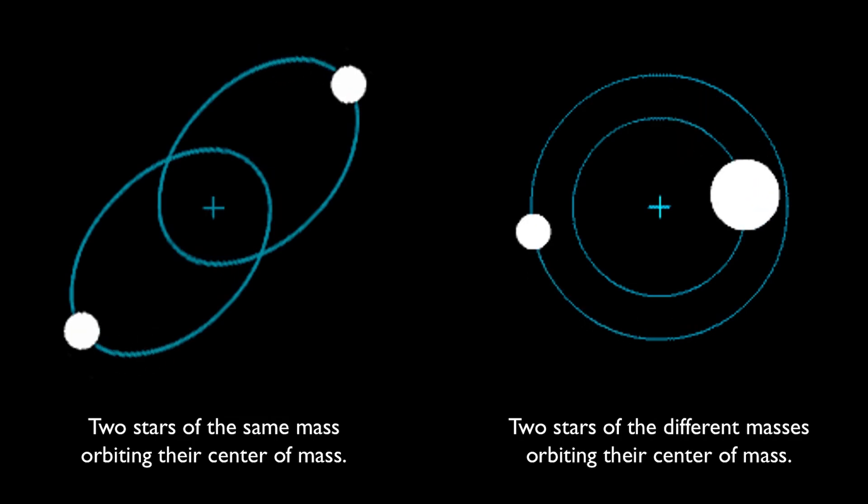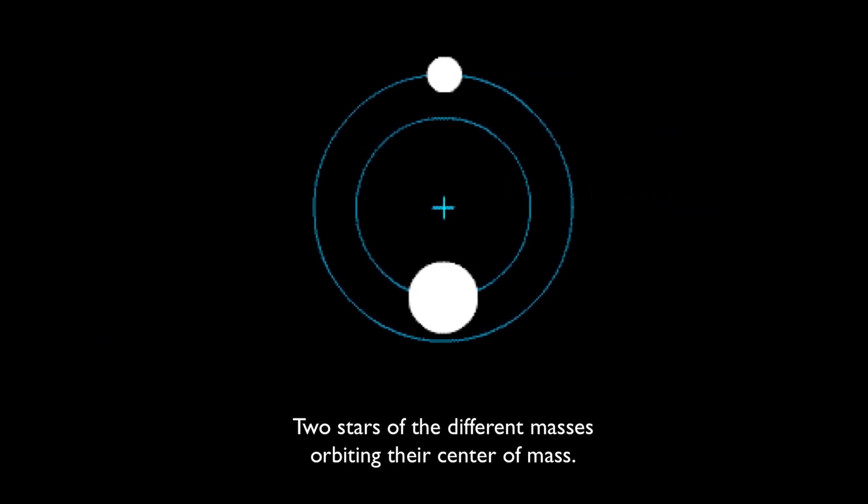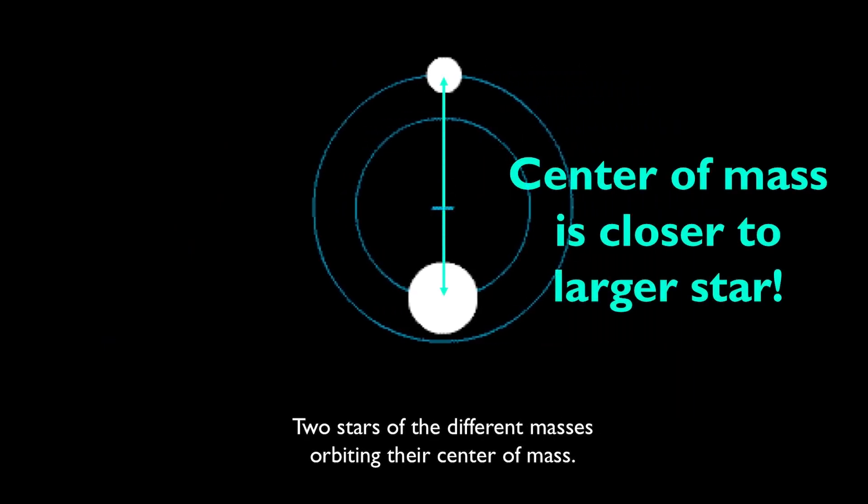In the case of two uneven masses, we can see that the center of mass is actually closer to the larger star. With some information about the orbits of these two stars and the total mass of the system, physicists and astronomers can actually calculate the mass of each individual star.